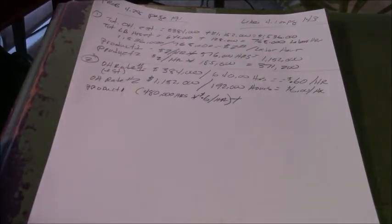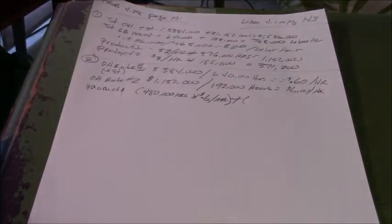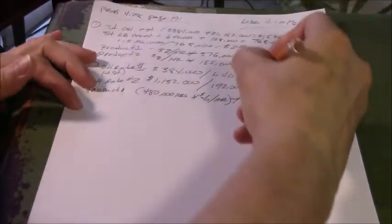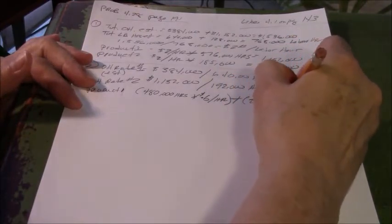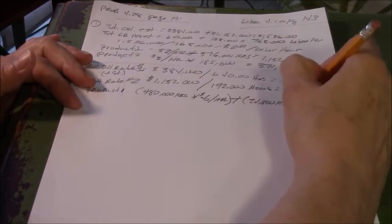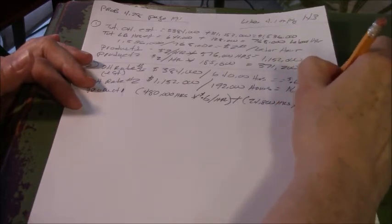And then we're going to add from department two, which was based on machine hours. So in this case, it is 24,008 for product one. This is machine hours times 6 per hour.